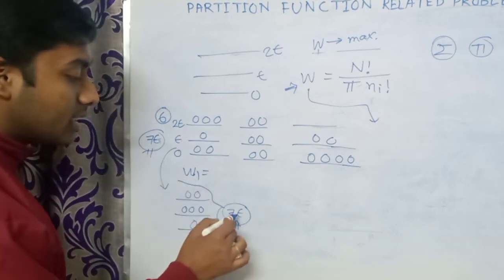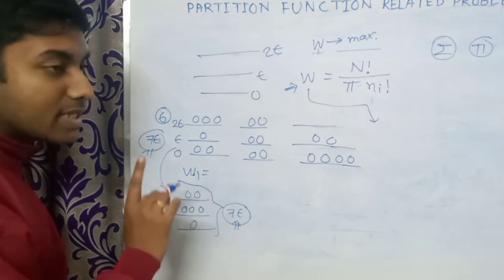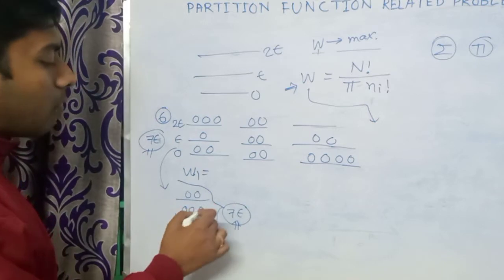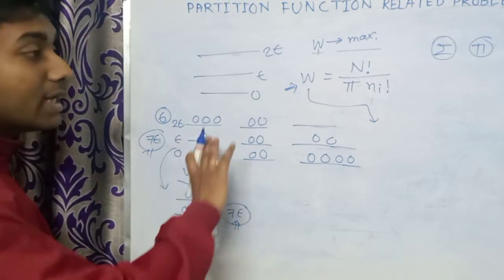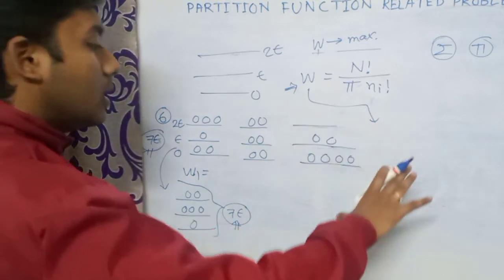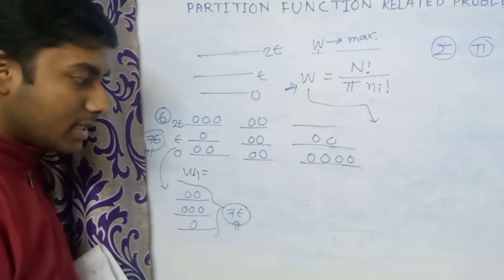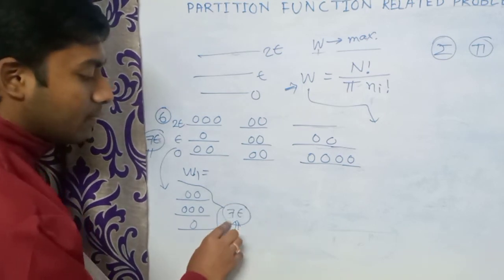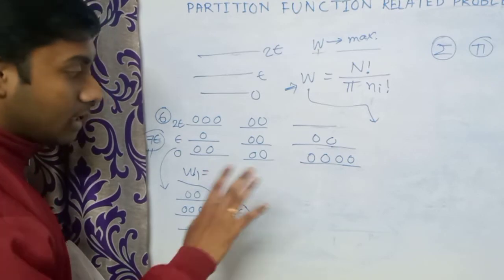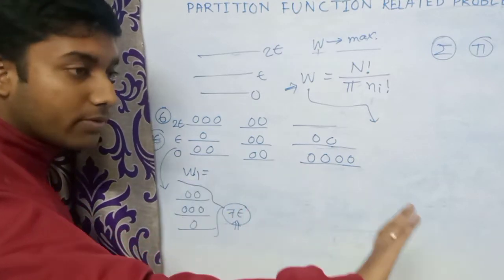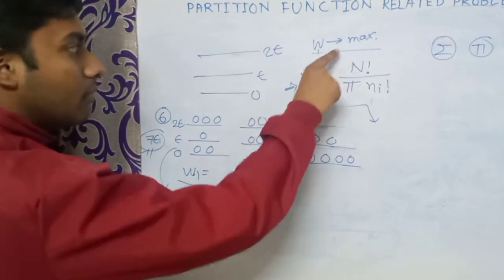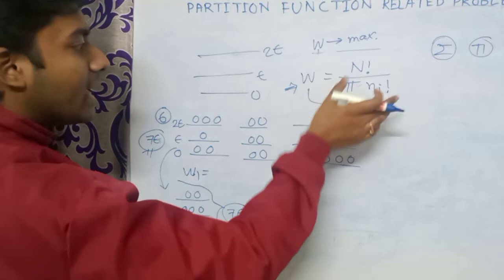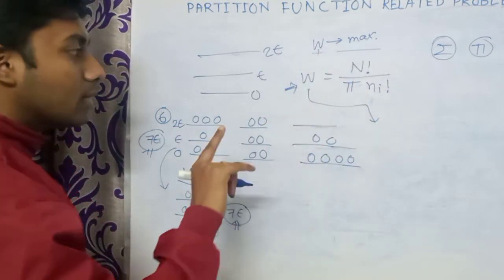The macrostate is defined by the total energy being 7ε. There are many configurations (microstates) that satisfy the condition of total energy = 7ε. The total number of such configurations is called the total number of microstates for that macrostate. Using the formula, we can easily calculate W for each configuration.